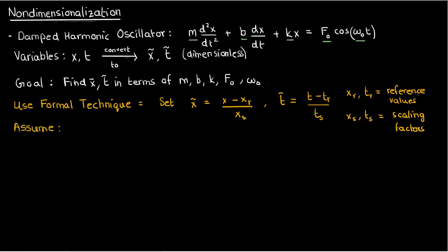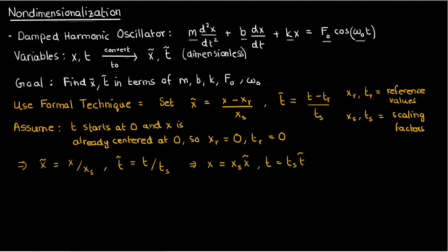For now let's assume that our time starts at zero and the position of our oscillator is already centered at zero, so our reference values are both zero. This means that our dimensionless quantities are just x/xₛ and t/tₛ. If we rearrange these equations we can obtain our dimensional variables in terms of our dimensionless variables. So x = xₛ·x̃ and t = tₛ·t̃.